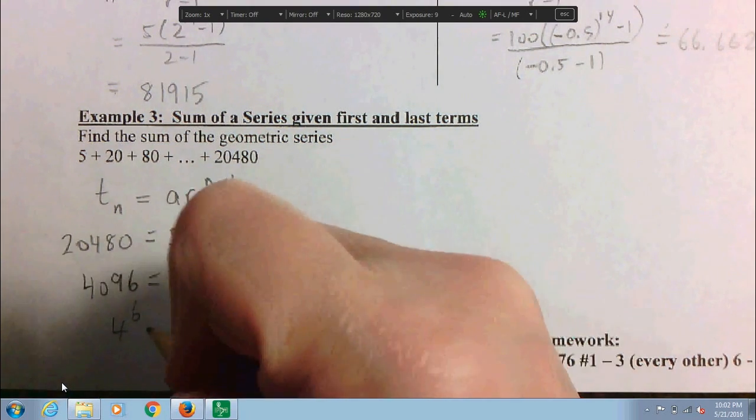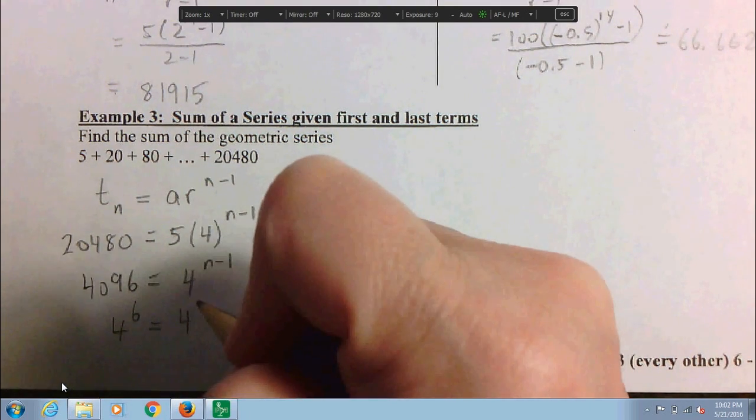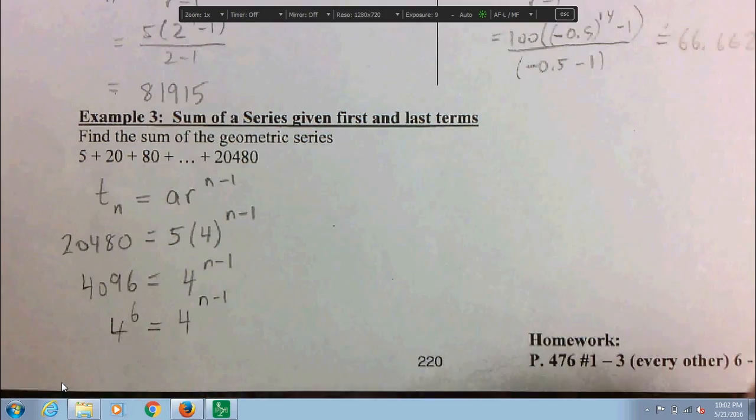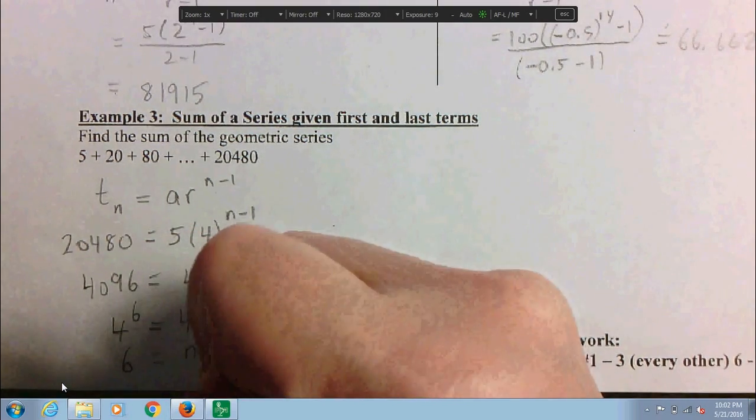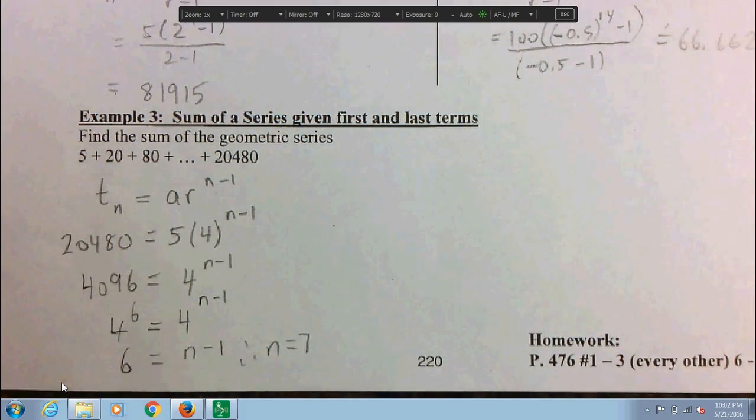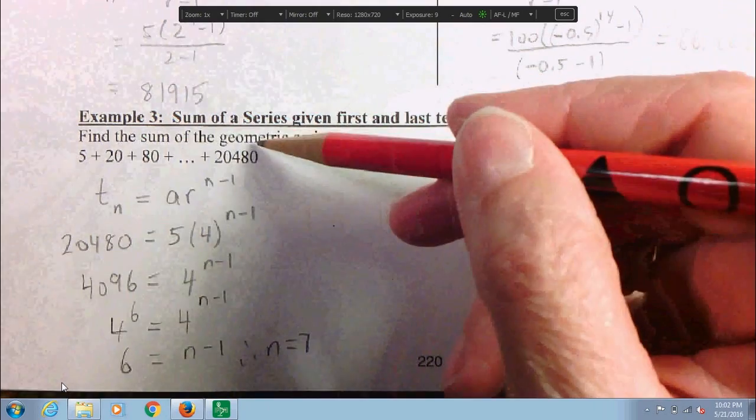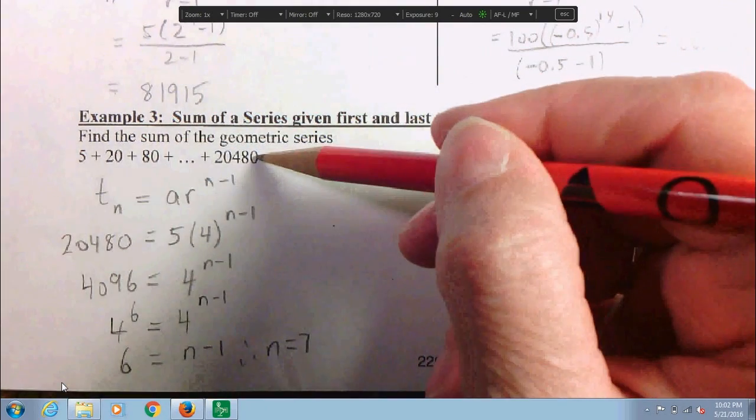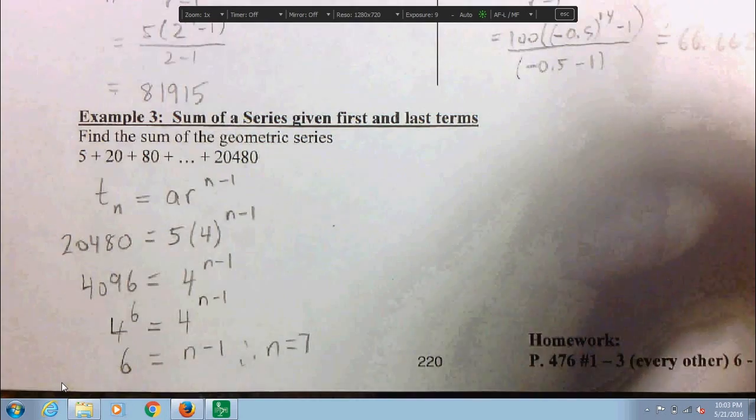It turns out to be 4 to the 6 is 4,096. So we have 4 to the 6 is 4 to the n minus 1, which means 6 equals n minus 1, therefore n equals 7. Now that we know how many terms are in the series, we can now use the sum of the series formula to figure out the sum.